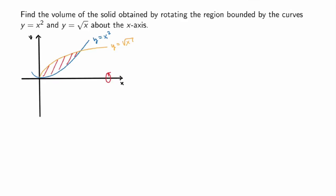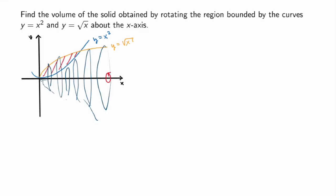So what does the solid of revolution look like? If you think about it, you're taking this region and rotating it about the axis, so you end up with some sort of solid that looks like this — you're rotating the whole thing around, and you basically have a weird solid with a kind of hole in the middle.